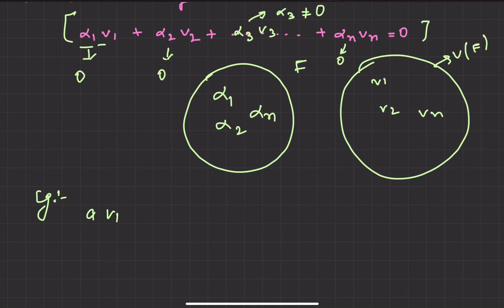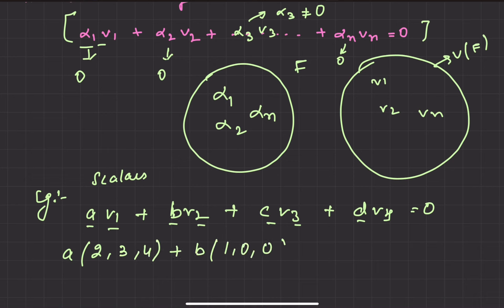Let's take this example: a v1 plus b v2 plus c v3 and d v4 equal 0. What are a, b, c, d? These are all scalars. And v1, v2, v3, v4 are the vectors. We take v1 as (2,3,4), v2 as (1,0,0), v3 as (0,1,0).